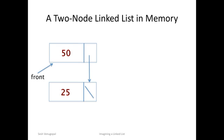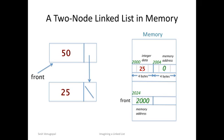So what does this two-node linked list look like in memory? Let's start with the previous example of the single node containing 25 with a front variable holding its address. We need to add the node containing 50. Say we find a place for it at the address 1984. The integer 50 will be located in the first four bytes starting at 1984. The next four bytes starting at 1988 will hold the address of the next node, that is the address of the node containing 25. That address is 2000.